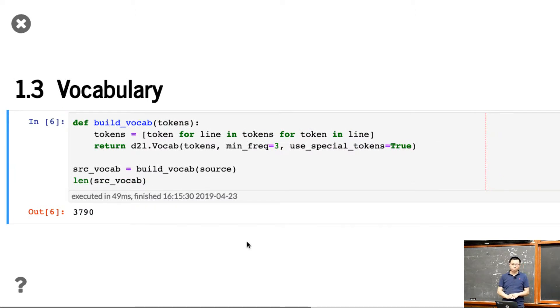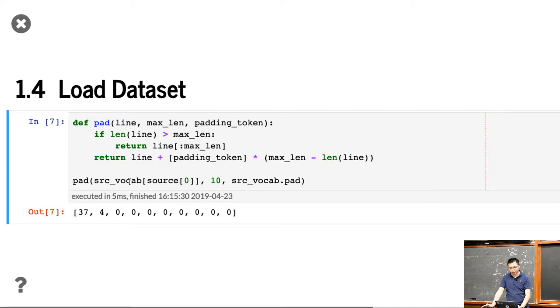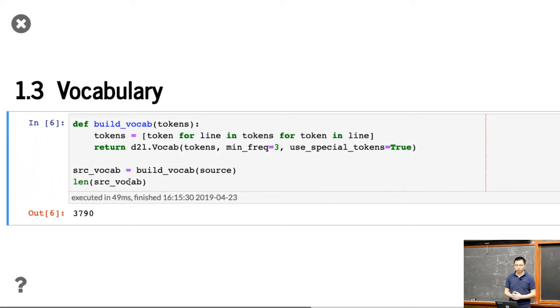So similarly, we build the vocabulary. The only difference here is that we need to build the vocabulary for both the source dataset and also the target dataset. It's a pretty tiny model. So the unique words in the English is only about 4,000. And similarly, we need to first build the vocabulary for the source dataset as English. The minimum frequency we choose is three, and we use special tokens equals two, which means we need to add all the beginning of sentence, end of sentence, specialized tokens.